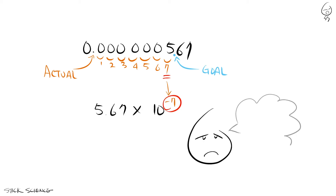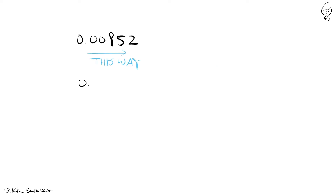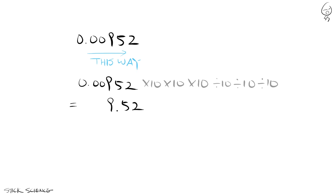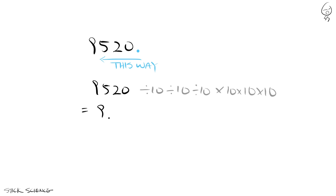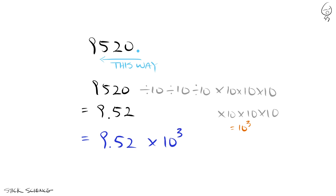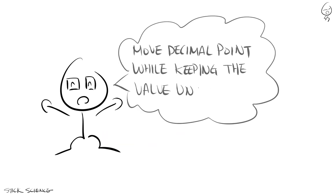If you get confused whether the exponent should be positive or negative, just remember the original process. If you want to move a decimal point right, you need to multiply with a 10. But if you want to keep the value unchanged, you need to divide with a 10 immediately thereafter. So if you're left with a bunch of divisions after you're done moving your decimal point, then your exponent should be negative. On the other hand, if you move the decimal point left, you'll be left with a bunch of multiplications, which means your exponent should have a positive value. And that's how you convert standard form to scientific notation.